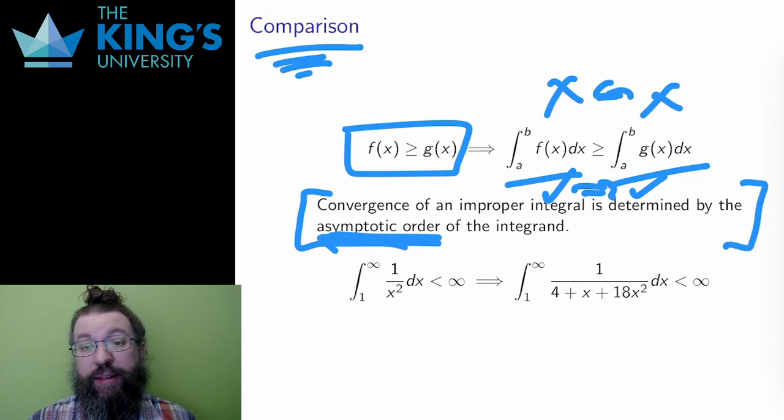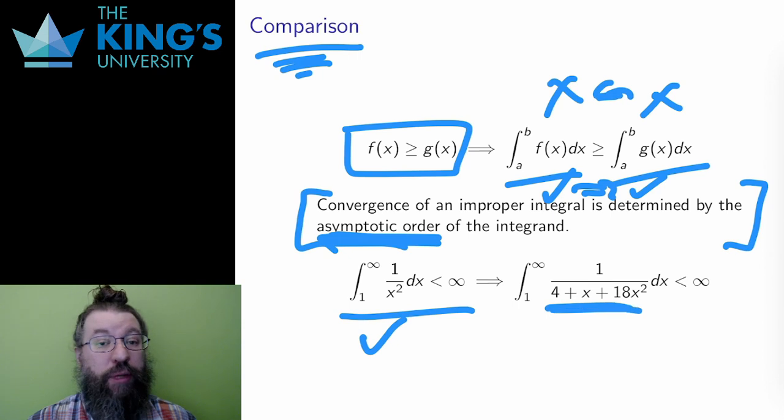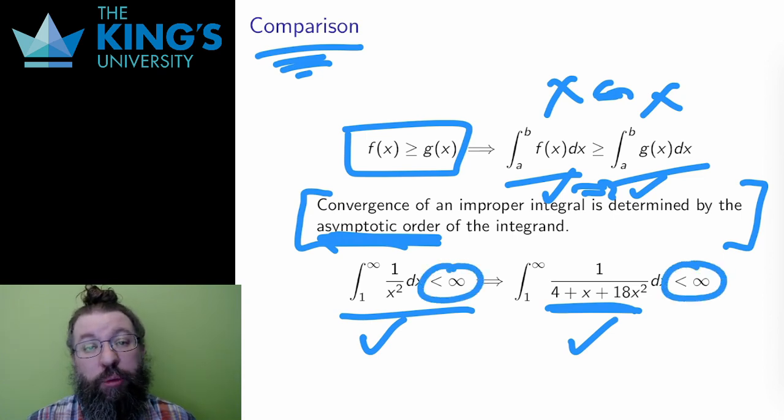I calculated that 1 over x squared from 1 to infinity converges. Therefore, 1 over 4 plus x plus 18x squared integrated from 1 to infinity also converges. This less-than-infinity notation is pretty common shorthand for convergence of improper integrals.